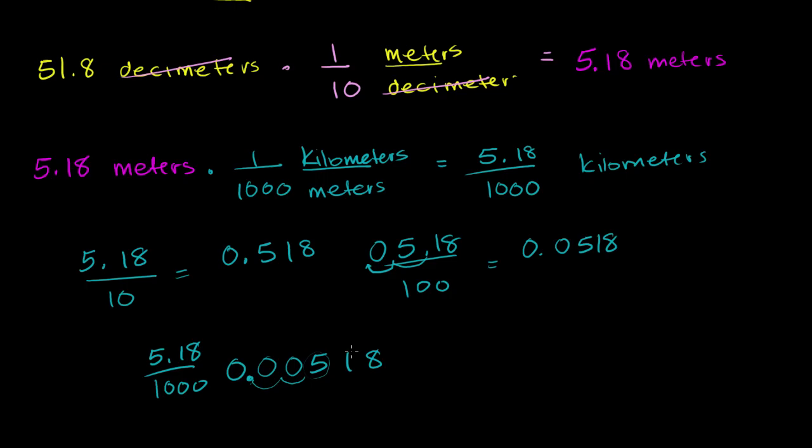So our final answer: 51.8 decimeters is equal to 0.00518 kilometers. And always do a reality check. Does that make sense? Well, sure. We're going from a really small unit here, a bunch of a small unit, to a very small amount of a large unit. It makes sense that this number goes down while the actual unit becomes larger.